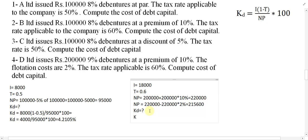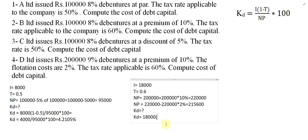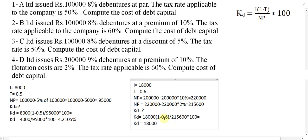Now we can apply the formula. Cost of debt KD is equal to I multiplied by (1 minus tax rate), divided by NP, multiplied by 100. I is equal to 18,000. So KD equals 18,000 multiplied by (1 minus 0.6), which is 0.4, bracket close, divided by 2 lakh 15,600, then multiplied by 100.